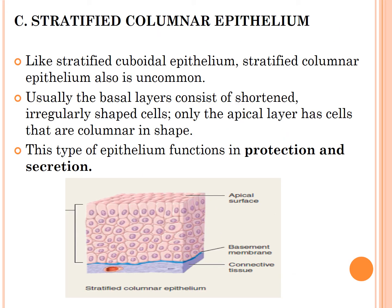Stratified columnar epithelium is also uncommon. Usually, the basal layer consists of short, irregularly shaped cells, and only the apical layer cells are columnar in shape. This type of epithelium functions in protection and secretion.